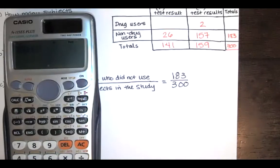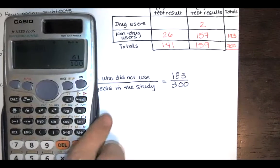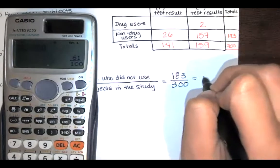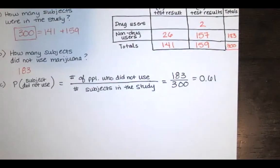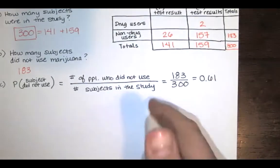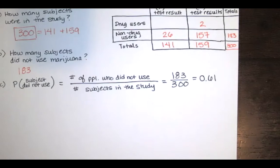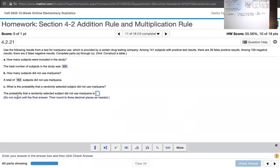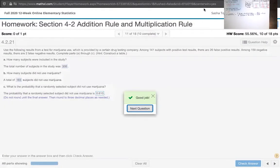You could simplify it. 183 divided by 300 turns out to be 61 over 100, which is the same as 0.61. So there's a 61% chance of selecting a person that did not use marijuana from those that were included in the study. It says do not round until the final answer, and then round to three decimal places as needed. So let's say 0.610. And that's it. That's how we solved that problem.